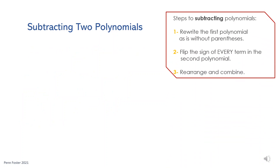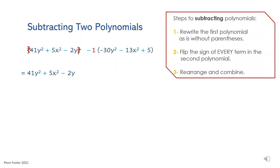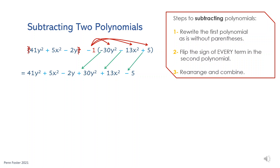To subtract two polynomials, start by rewriting the first polynomial as is, just without its parentheses. When it comes to the second polynomial, it's important to realize that the entire second polynomial is multiplied times negative 1. So in order for the polynomial to break free out of its parentheses, negative 1 must be distributed over each and every term of the second polynomial. Negative 1 times negative 30y squared is positive 30y squared. Negative 1 times negative 13x squared is positive 13x squared. And negative 1 times positive 5 is negative 5. Note what just happened to the signs — they flipped. Any negatives turn to positives and any positives turn to negatives.